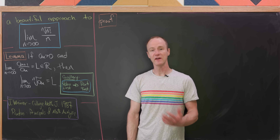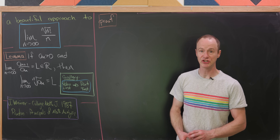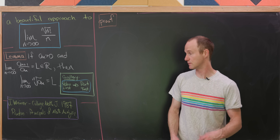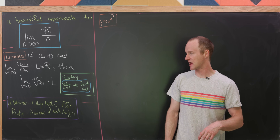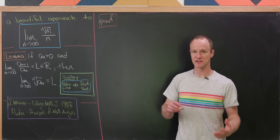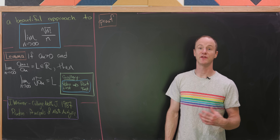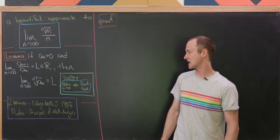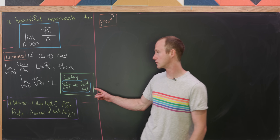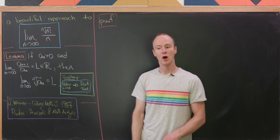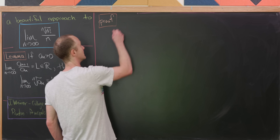Observe that very quickly there's a corollary to this that says the ratio test implies the root test. What I really mean is that if you can prove the ratio test by some other means — the classic way is with the comparison test — then you can easily use the ratio test to prove the root test. So let's get into the proof of this lemma.